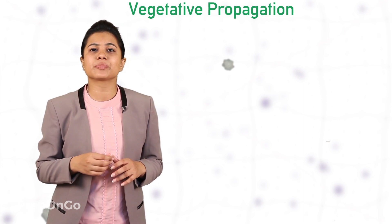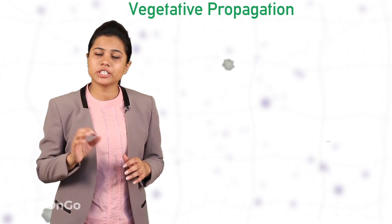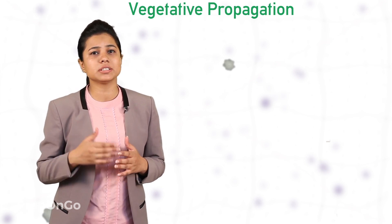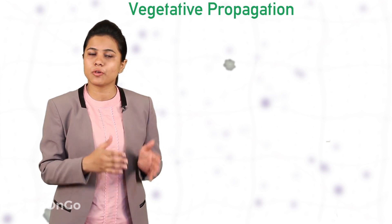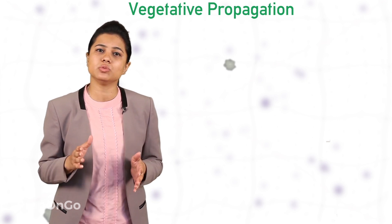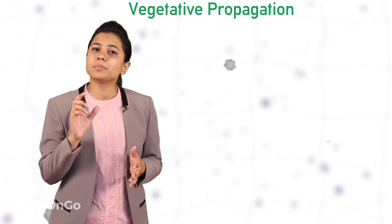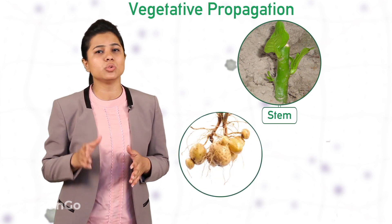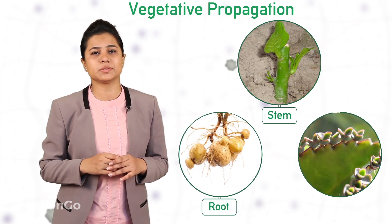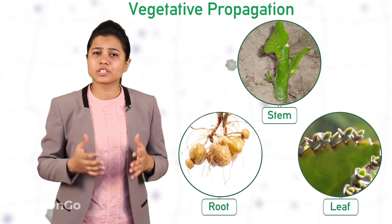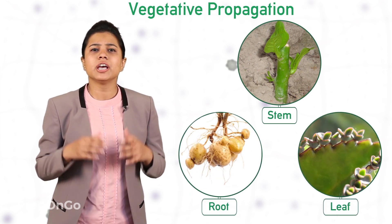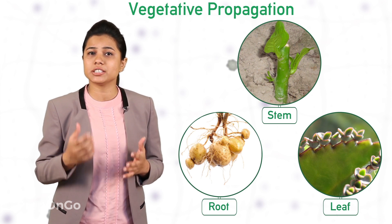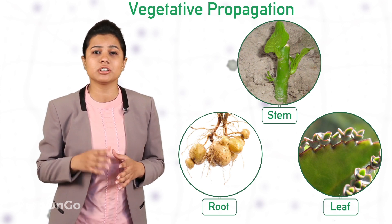In vegetative propagation, new plants are formed or produced from the parts of old plants like stems, roots, or leaves. It is actually a very simple process — in fact, the simplest method of asexual reproduction in plants.